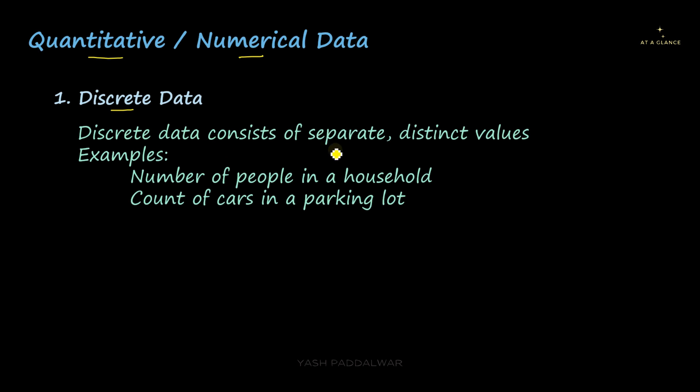Discrete data consists of separate and distinct values. The first thing you need to remember is that discrete data will contain numbers, but what type of numbers? There will be separate and distinct numbers. You can also say whole numbers. For example, the number of people in a household. Obviously, the number of people in a household cannot be in fractions. There will be a particular whole number that will be the count. Similarly, the count of cars in a parking lot cannot be a fraction. It has to be a whole number. Discrete data is some sort of distinct or whole values.